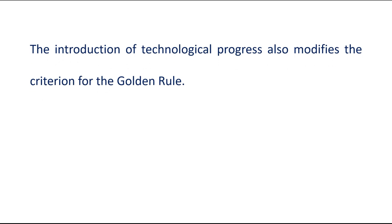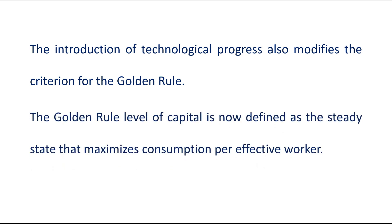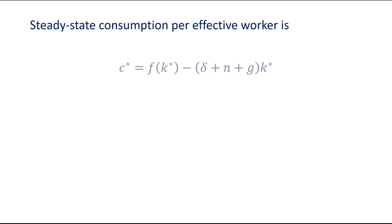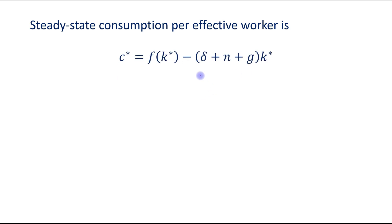The introduction of technological progress also modifies the criteria for the golden rule. The golden rule level of capital is now defined as the steady state that maximizes consumption per effective worker. We maximize steady-state consumption per effective worker by taking its derivative.